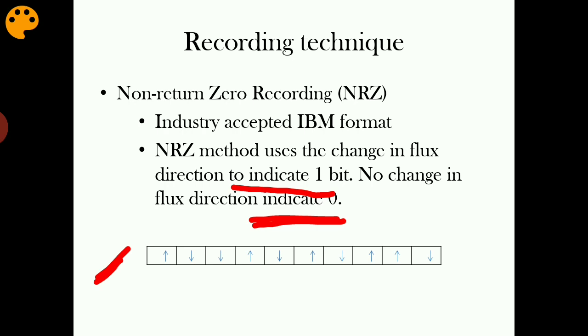If you look at this magnetic tape here, there is a sequence of units in which the magnetization of each unit is indicated by the arrow. When there is a change in flux direction, that means a bit one. If we compare the first unit and second unit, there is clearly a flux direction change. That means these units represent bit one.